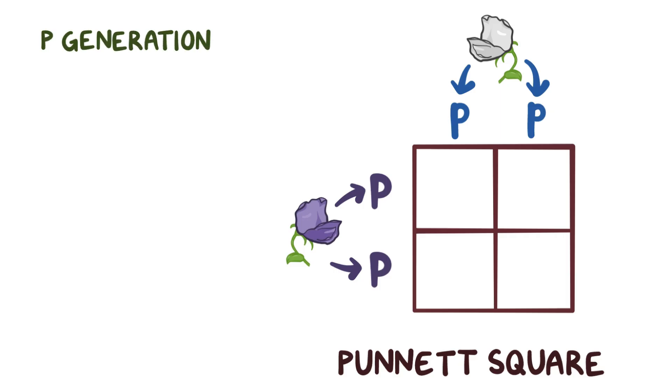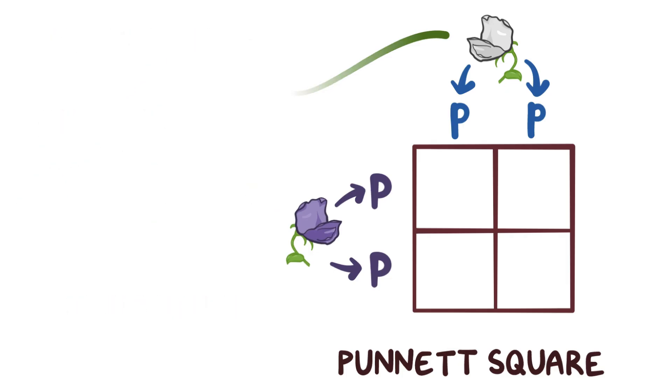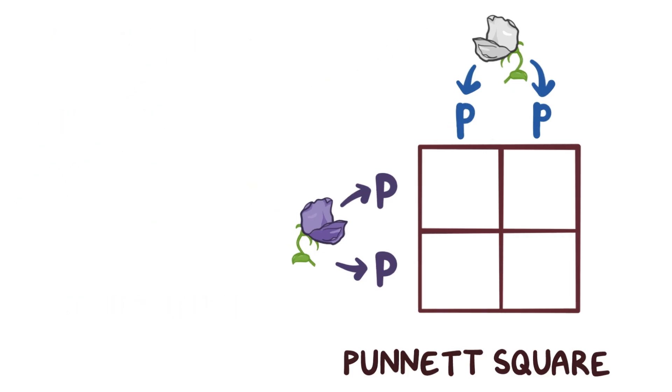In the P generation, Mendel used pure breeding plants, so their genotype was two of the same alleles. In other words, both of the parent plants in this generation were homozygous for flower color trait, homo meaning same, and zygous referring to the male and female alleles. The violet pea plant had two of the same dominant alleles, capital P, capital P, and therefore had all violet flowers.